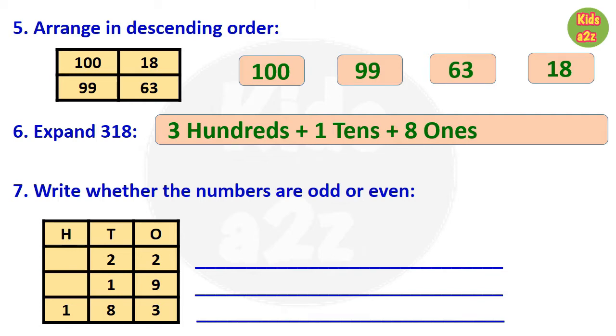Question number 7: here kids need to write whether the number is odd or even. Like, first one is 22, that is an even number. So beside 22, kids need to write even. Then next number is 19, so beside this they need to write odd. Next one is 183, that is also odd, so beside this they need to write odd.